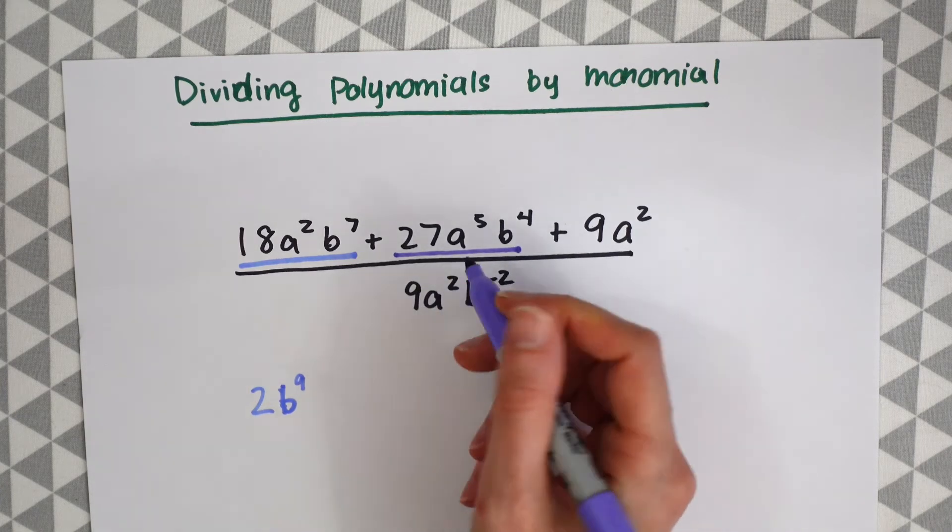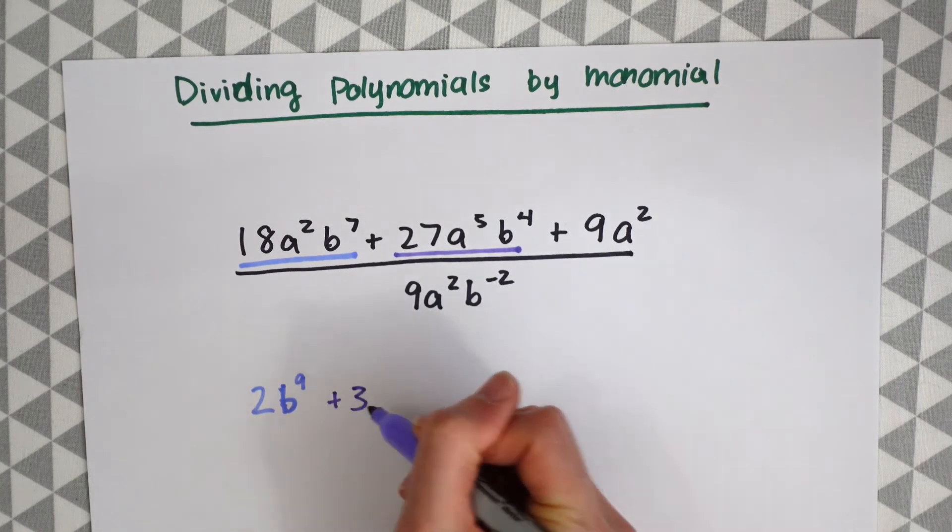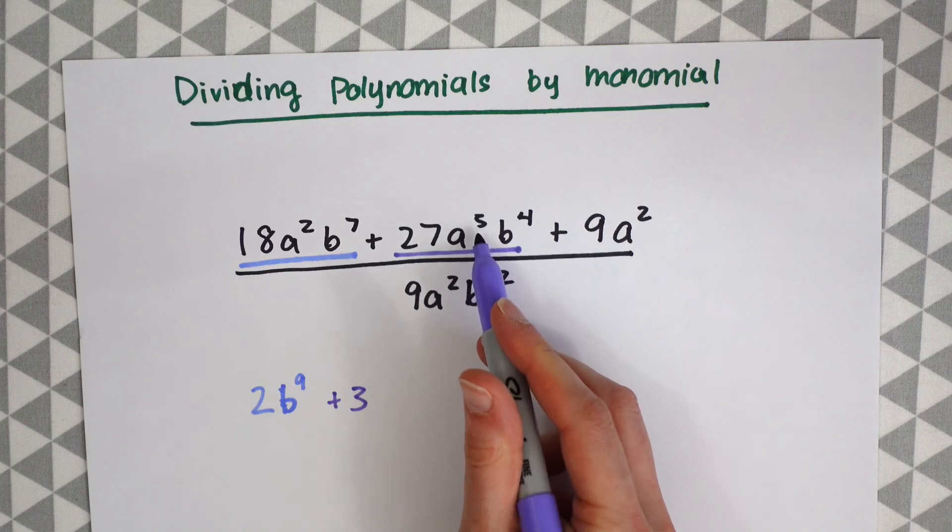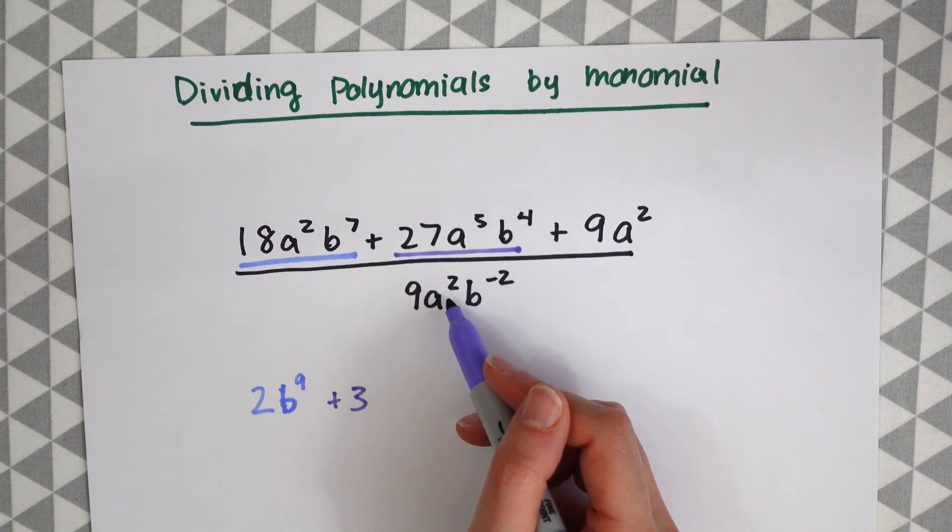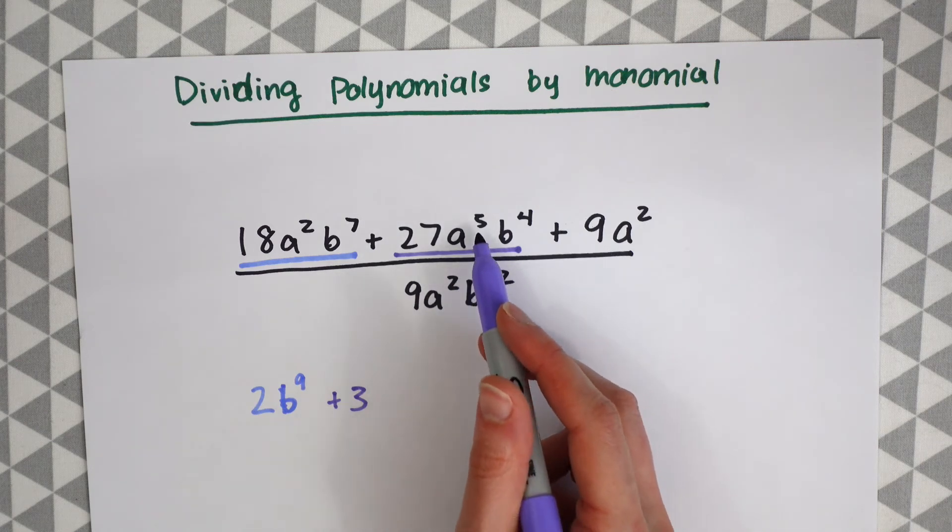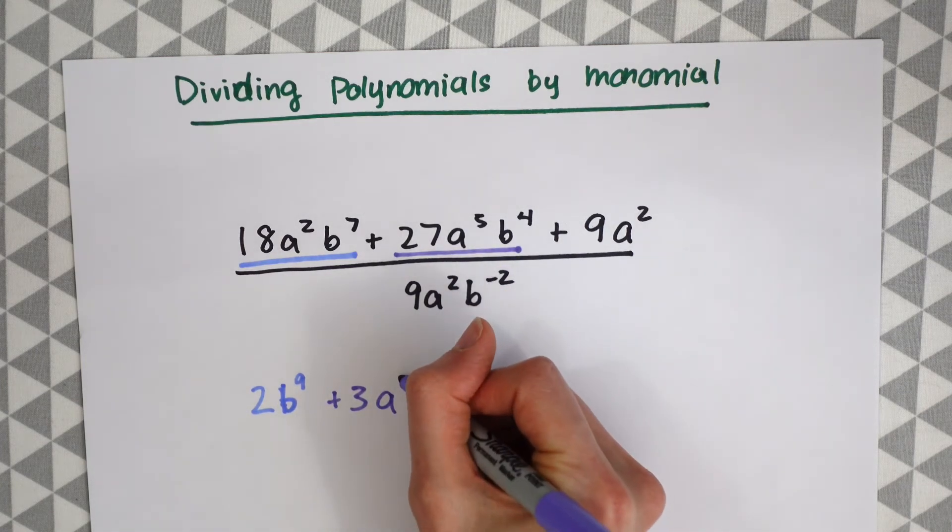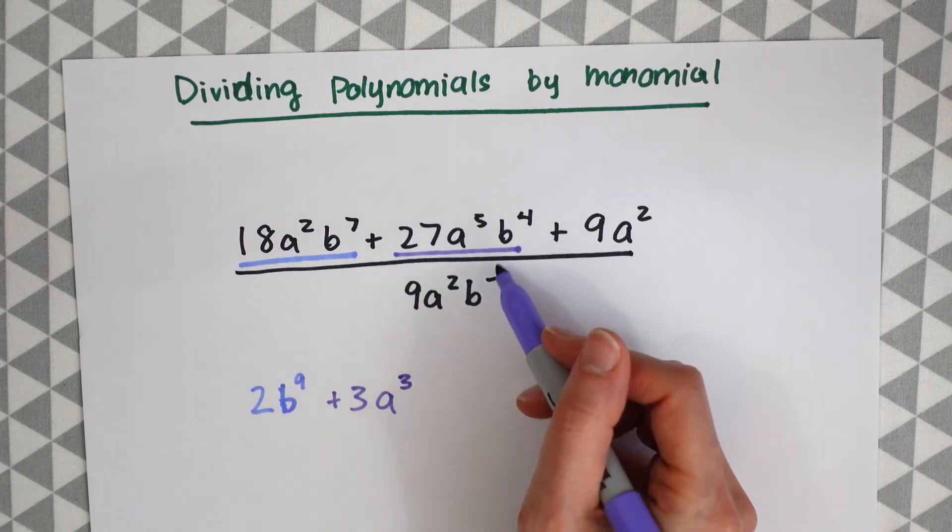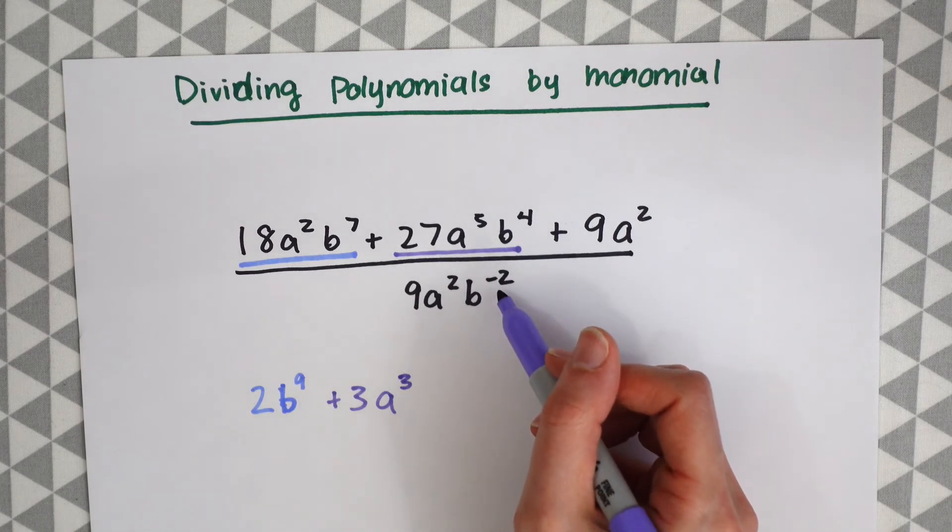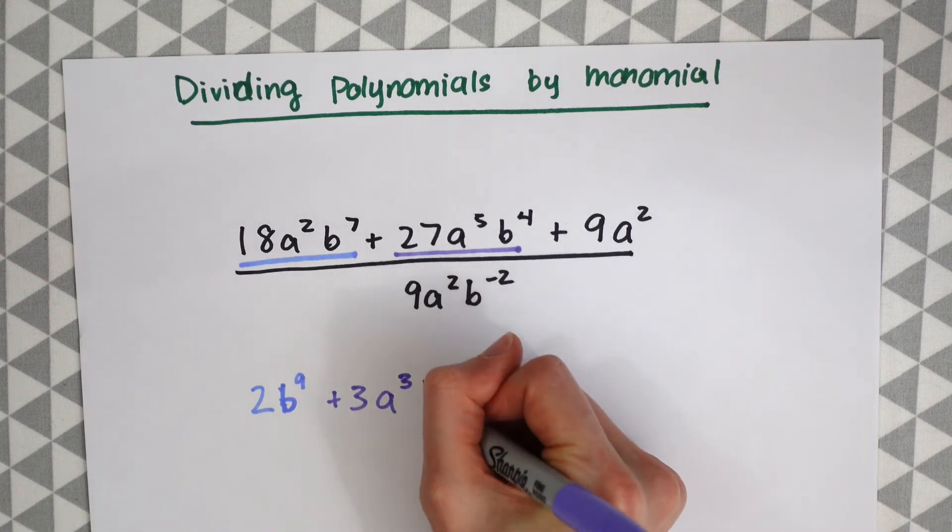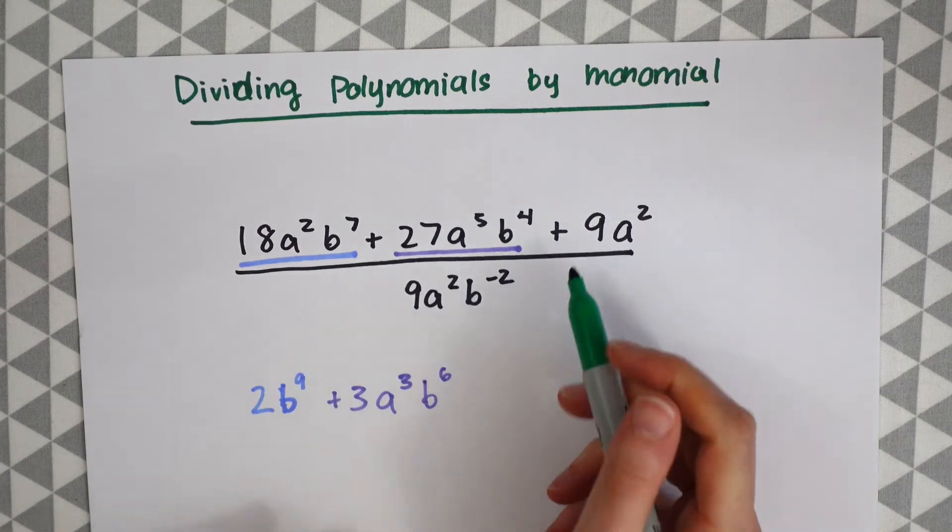So one step at a time. We have 27 divided by 9 gives us 3. a to the 5th divided by a squared. This is just exponent rules 5 minus 2. So a to the 5 minus 2 gives us 3. And then b to the 4th minus negative 2 will give us b to the 6. And then our last part.